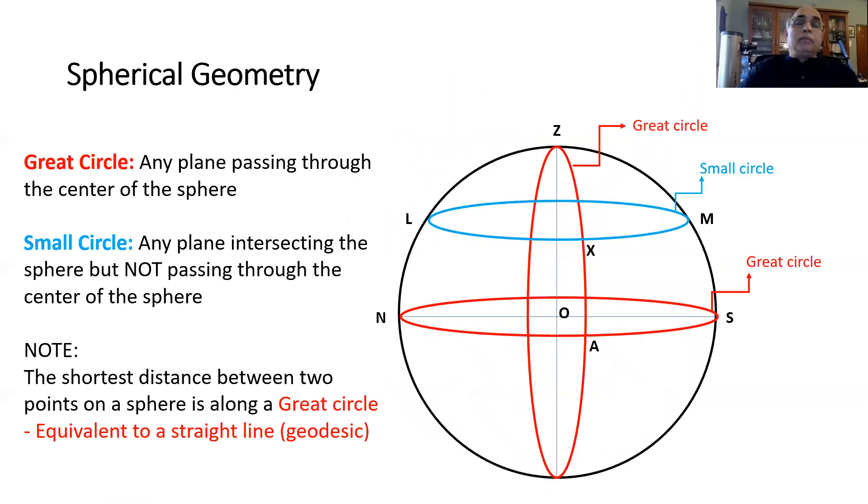Before we proceed with coordinate systems, I would like to talk to you about a little bit about spherical geometry. If you take a sphere and bisect it by a plane, the cross section you get is circular.